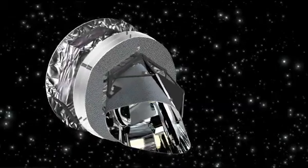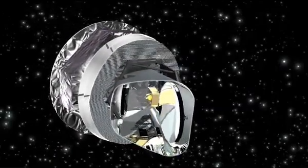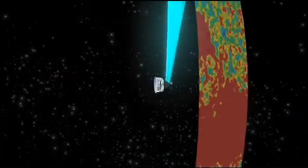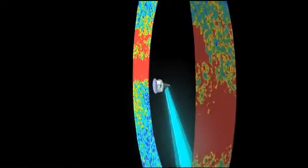The Planck spacecraft spins once a minute and as it does, the field of view sweeps a ring of 170 degrees in diameter. Planck can scan the entire sky in six months.